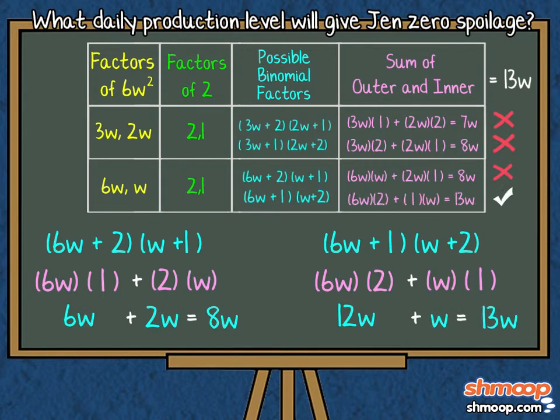After doing all the calculations, we can see that the factors 6W plus 2 and W plus 2 give us our correct B term, 13W, hiding out like a bunny at a fox convention.